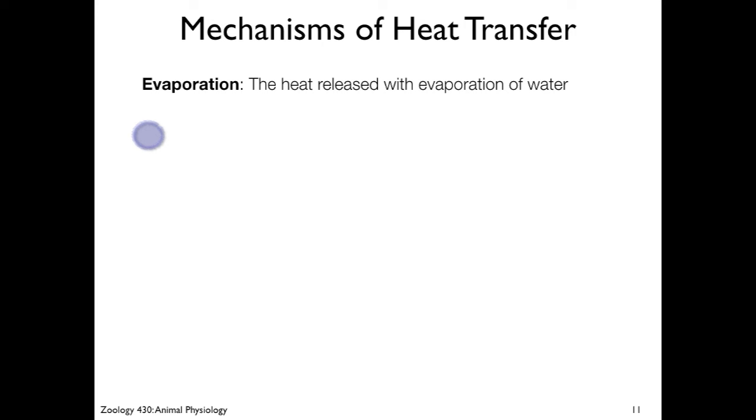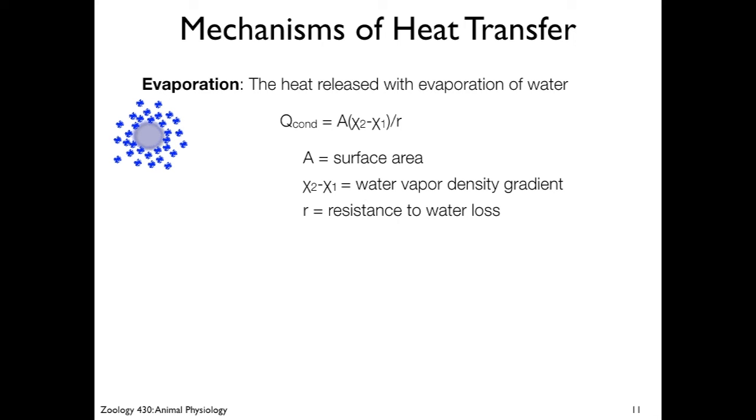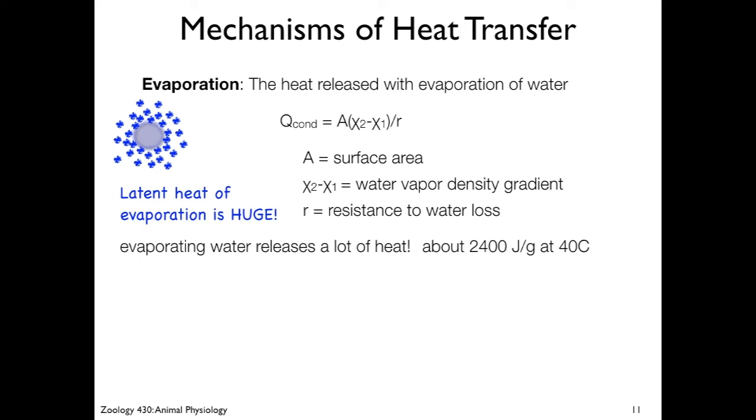Lastly, we're going to talk about evaporation, which is specifically heat that is released or transferred when water evaporates. Every living thing is composed of water, and so mostly everything has water on its surface. As the water vapor evaporates from the body, you can shed a lot of heat. This is the equation for the rate of heat transfer due to evaporation and it's proportional to the surface area. It's proportional to the water vapor density gradient, and it's going to be inversely proportional to the resistance to water loss. So the more resistant your skin, the lower your rate of evaporative water loss.